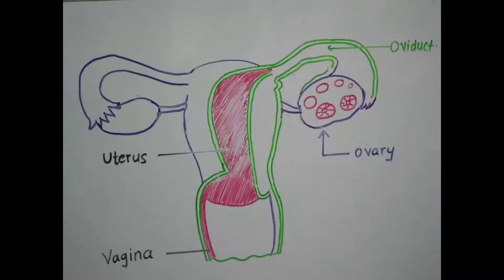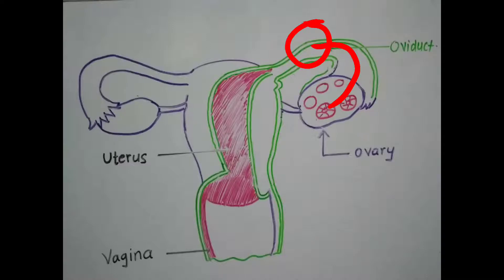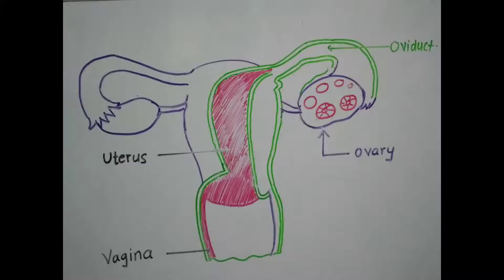This synthesized egg comes out from the ovary and settles in the oviduct, where it is ready to get fertilized with sperm. Once sperm enters through the vaginal opening and reaches the egg, fertilization takes place and a zygote is formed. The zygote then shifts to the uterus.